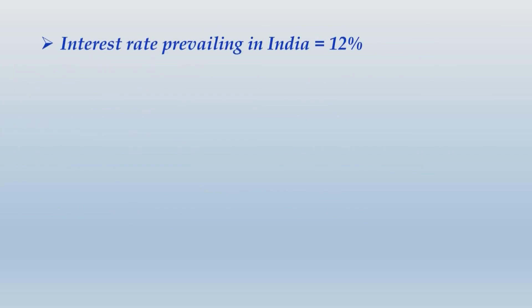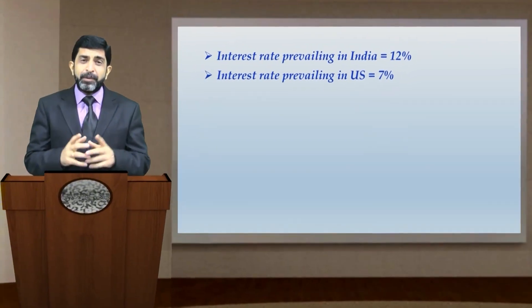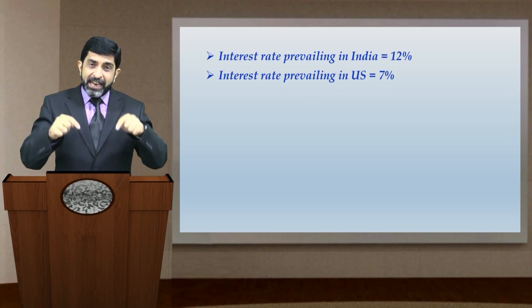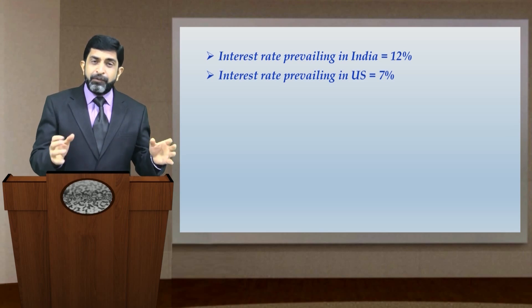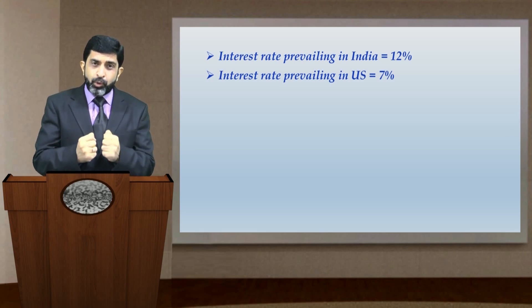To understand this concept better, let us take an example. The interest rate prevailing in India is given as 12 percent per annum, and the interest rate prevailing in the US is 7 percent per annum. Given this situation — where the US rate is just 7 percent and India's rate is 12 percent — this could appear to be a fantastic opportunity for anyone.